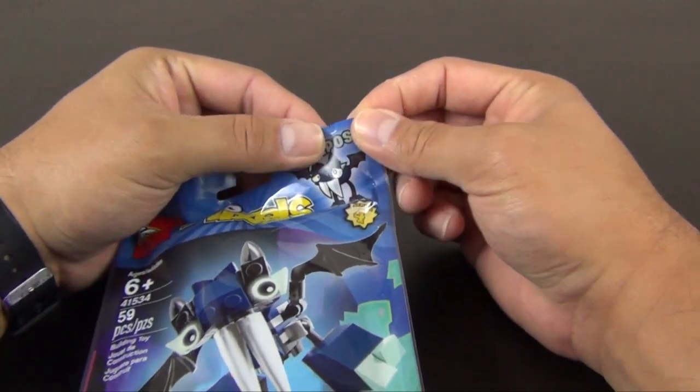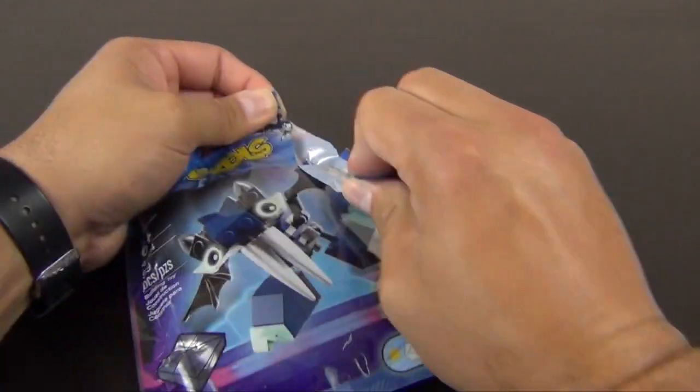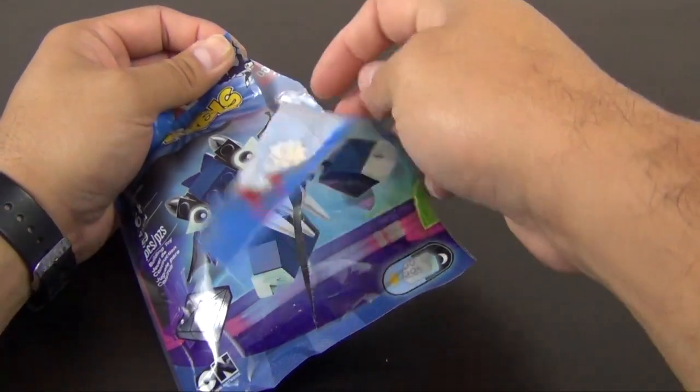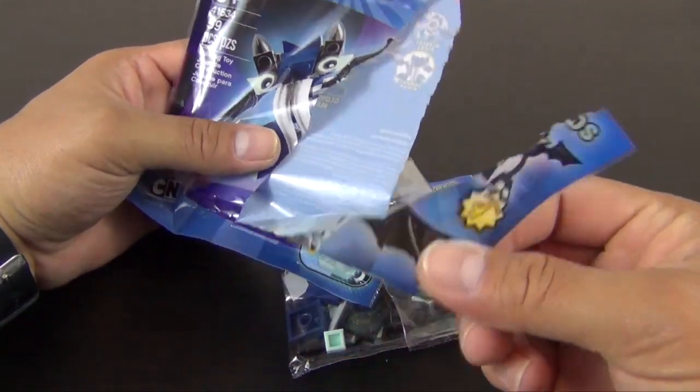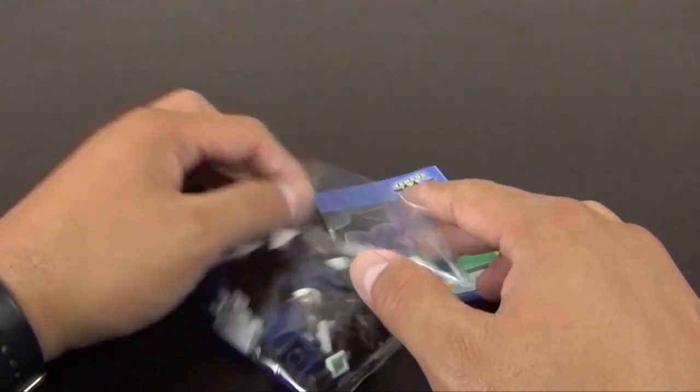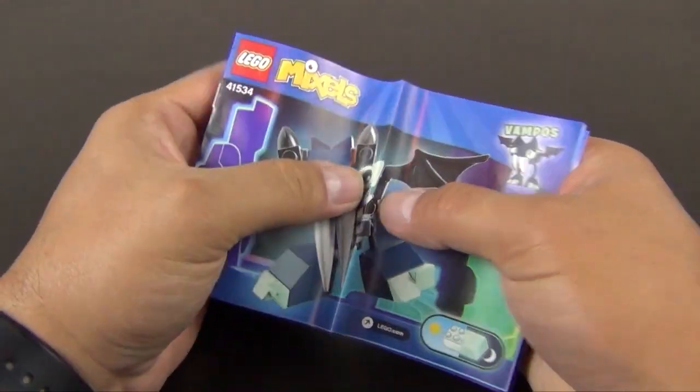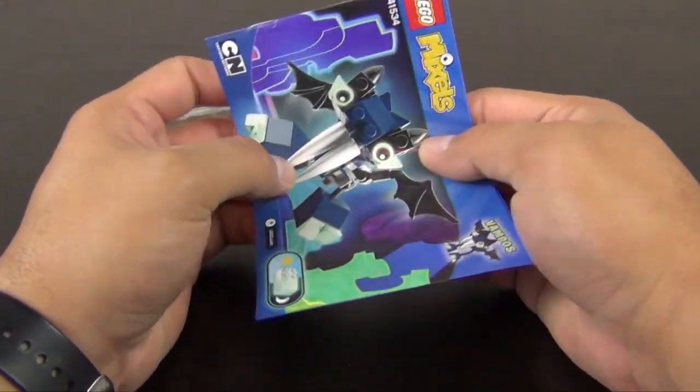So there's a little notch up here that you can grab and just pull down. That's what'll help open this packaging. It's basically a plastic bag, but they label this as a foil pack. It's not foil, it's plastic. It's a glorified poly bag is what I like to call it.